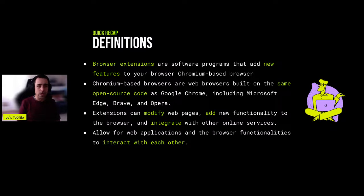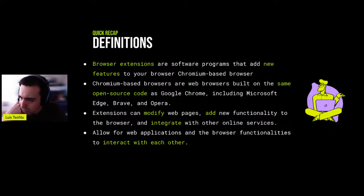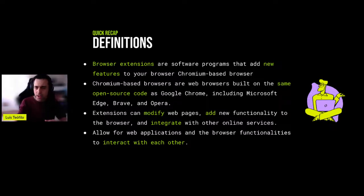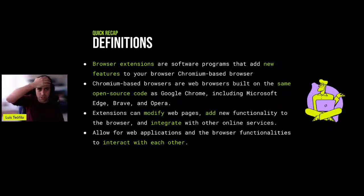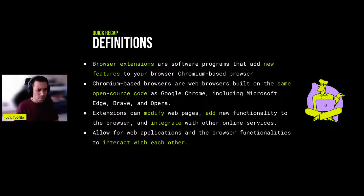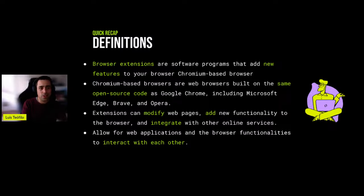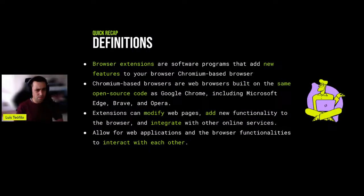I will now do a quick recap on the definitions we explored last week. Browser extensions are software programs that add new features to Chromium-based browsers, which are most used by far - browsers such as Google Chrome, Edge, Brave, and Opera. In principle, any extension you implement for a Chromium-based browser should work on the other browsers as well, as long as you prepare your calls regarding browser-specific features.